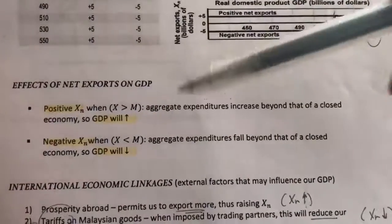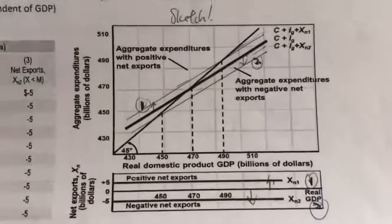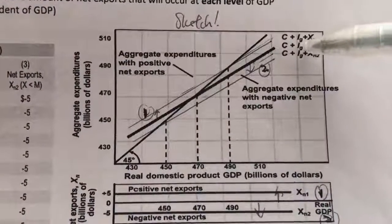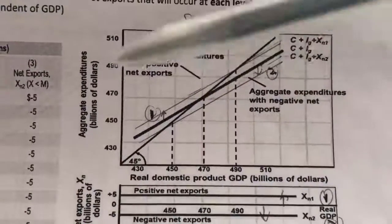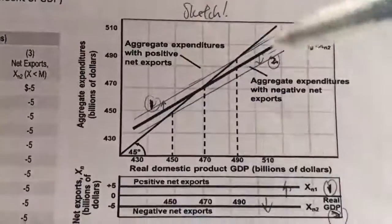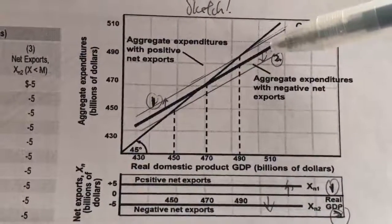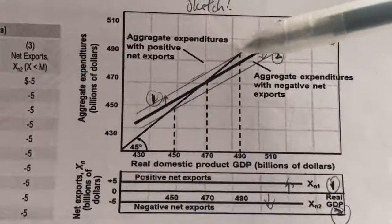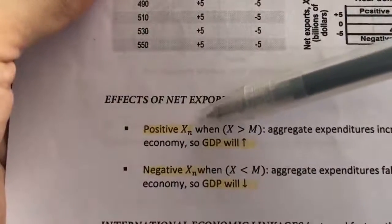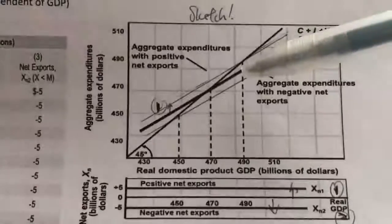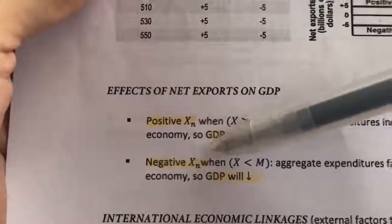Let's see the effects of net exports on GDP using the diagram. Initially, our aggregate spending is C plus IG — that is the economy when it is private and closed. Say we have a positive net export: this entire curve will shift upwards. Initially, our equilibrium GDP was 470, but when we have a positive net export and the line shifts upwards, we will have a new equilibrium at 490. So when we have a positive XN, GDP will increase. Likewise, when we have a negative XN, GDP will fall.